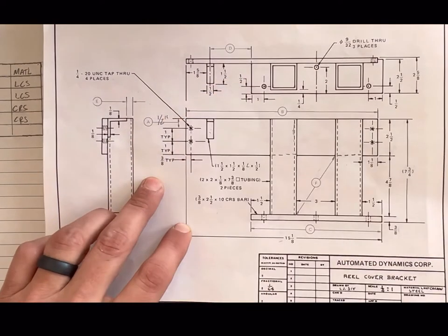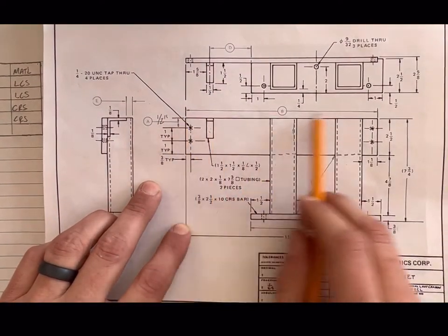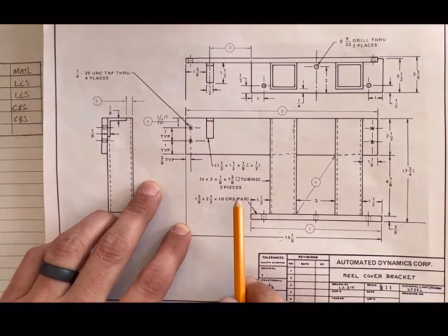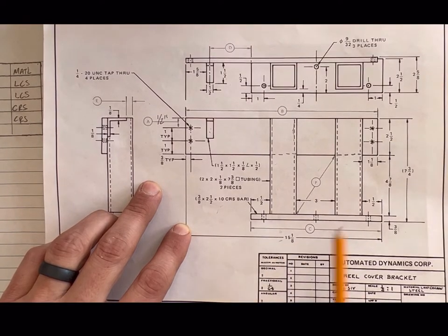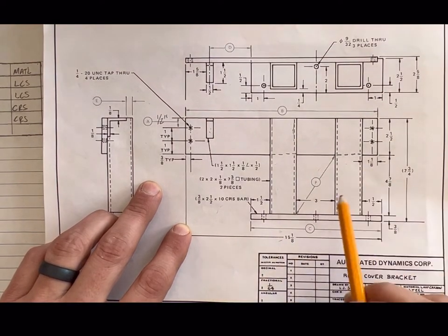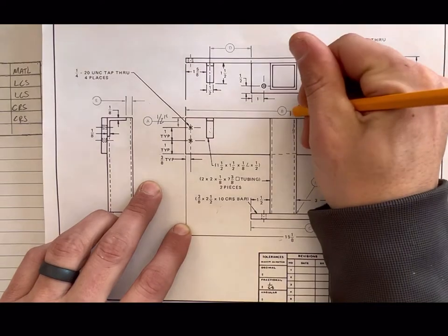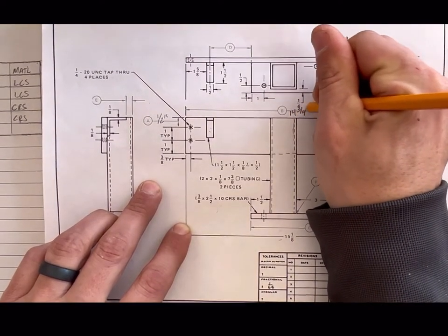If we look at B over here, we already did solve that. We said it was the 15 and one eighth minus the difference between these two, and that left us with 14 and three quarters inch.